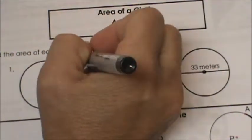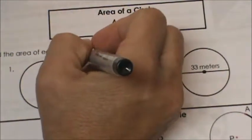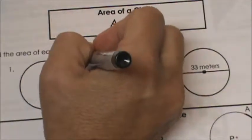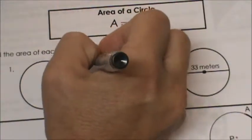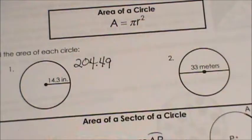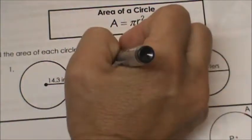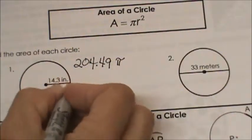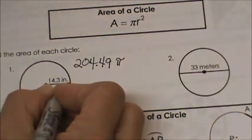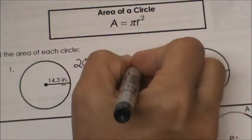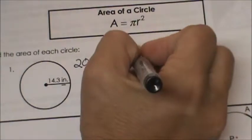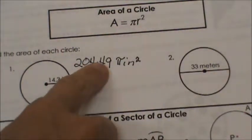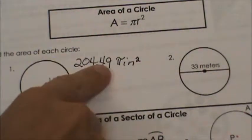So I'm going to get 204.49 pi and this is in inches squared because we're talking about area which is two dimensional.